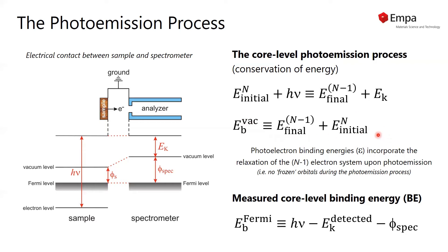This implies that we cannot consider the system as frozen during the photoemission process, because if we create a core hole in the photoemission process, the surrounding electrons will try to screen this, and this polarization or screening energy will be partly